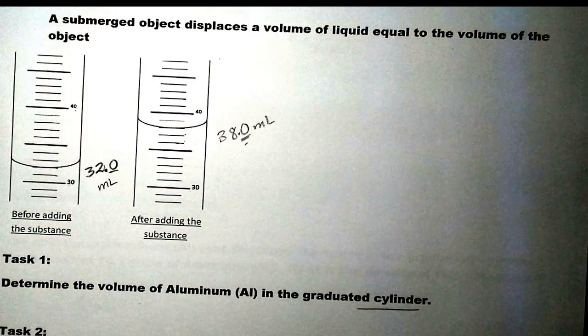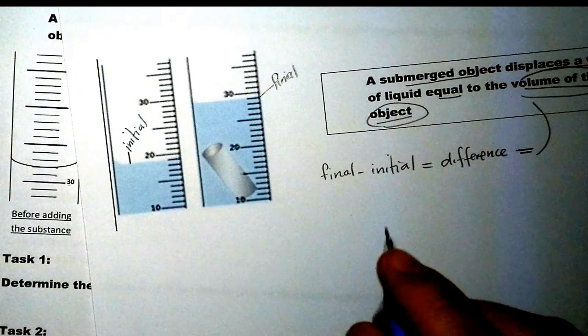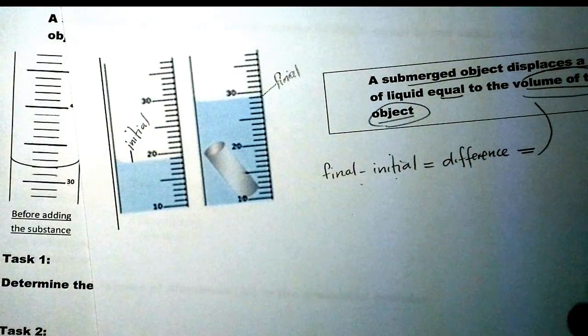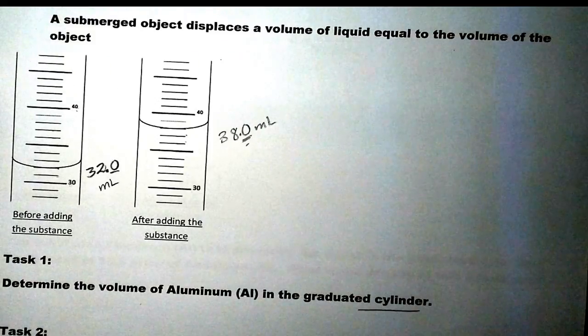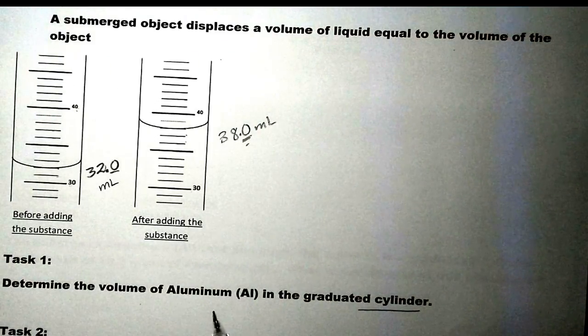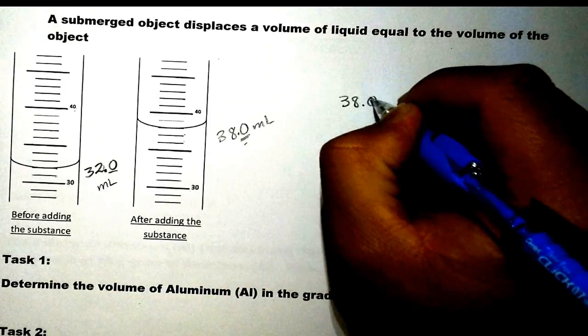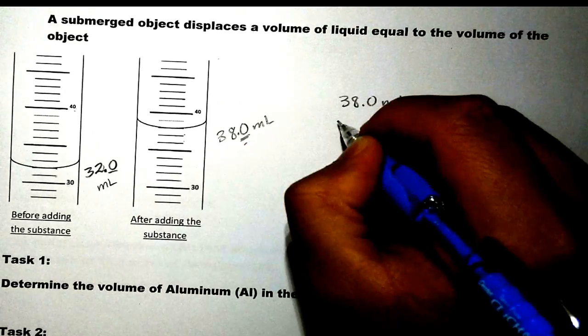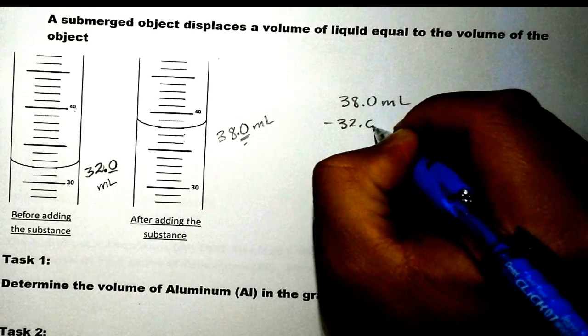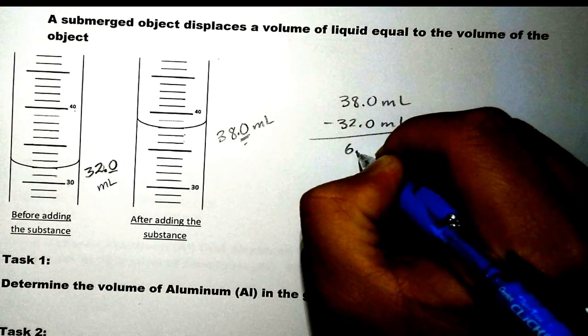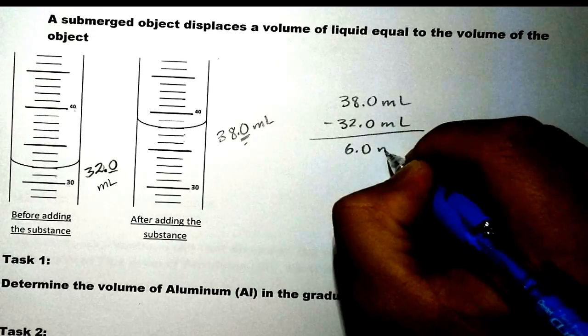So what we have here is again, going back to the question, take the final minus the initial, gives us the difference, which is the volume of the object. So to find the volume of aluminum, all we have to do is take the final, which is 38.0 mL, minus your initial, which is 32.0 mL.